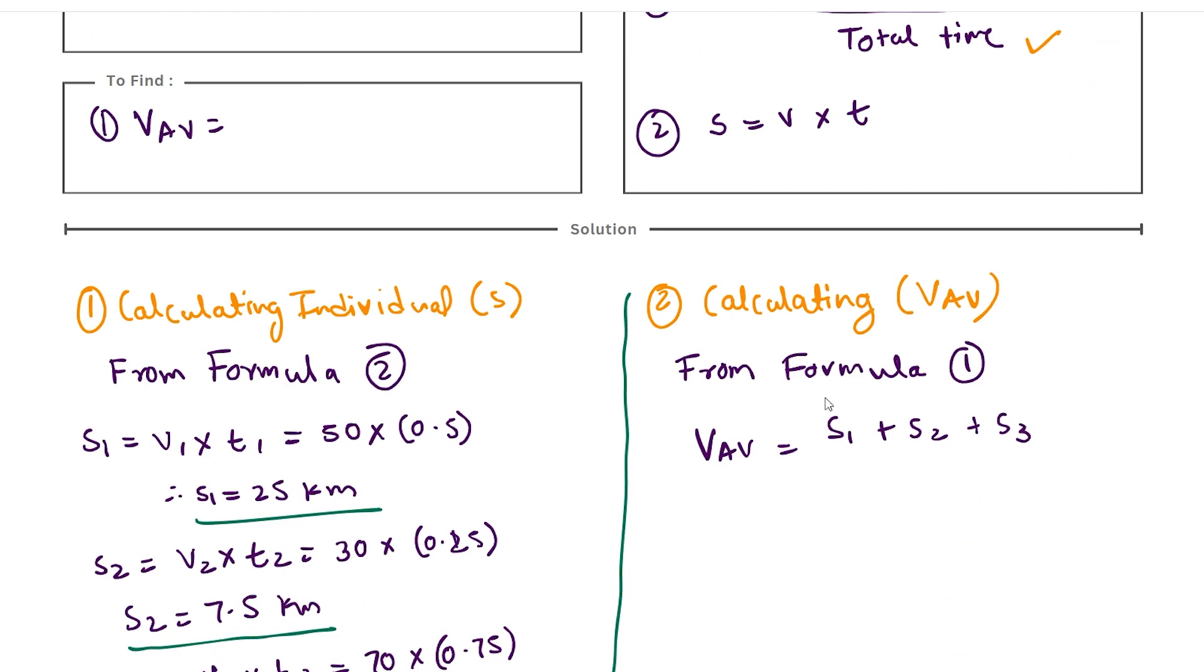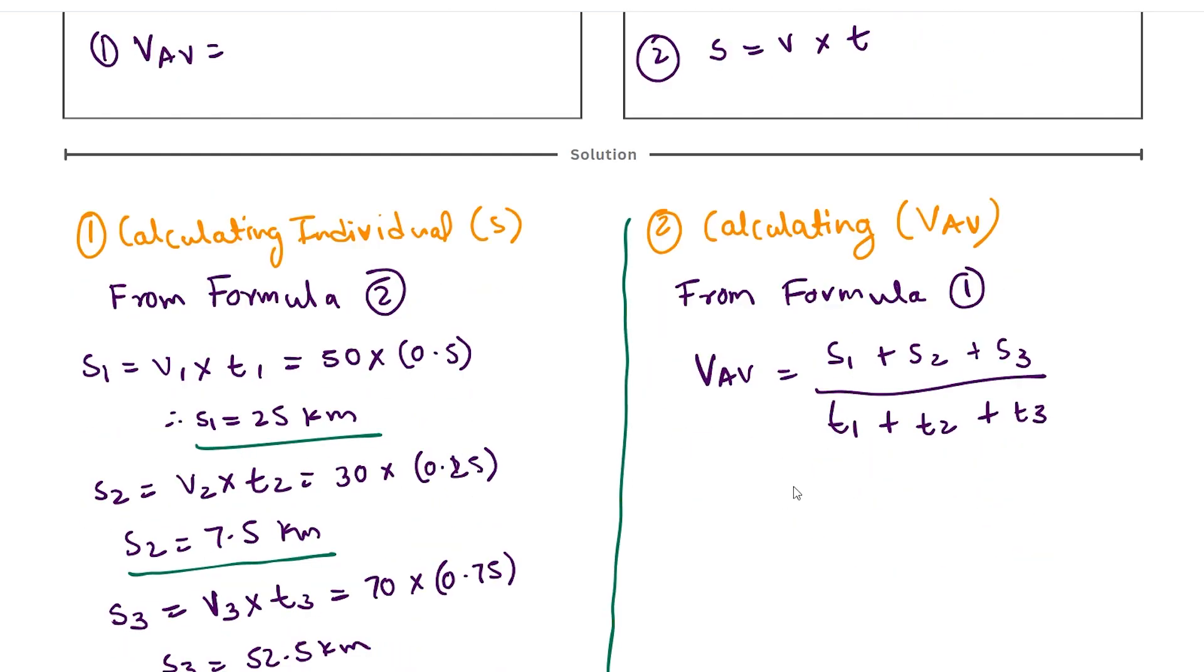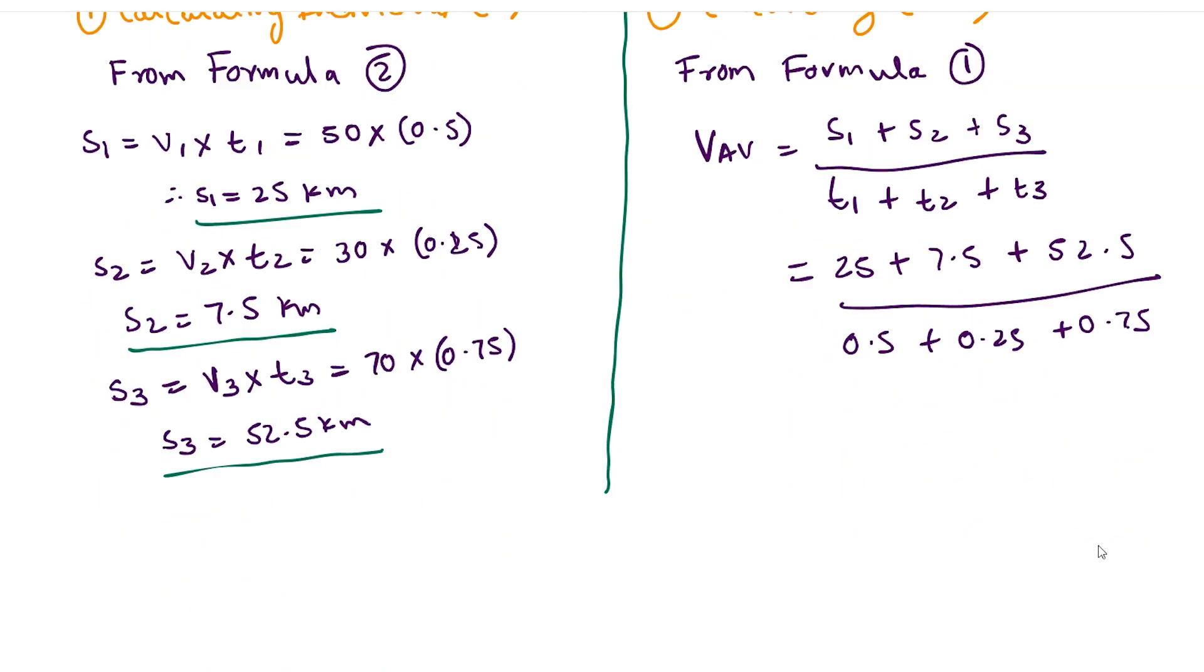From this formula we can say that average speed is equal to s1 plus s2 plus s3 as this makes up our total path length divided by t1 plus t2 plus t3 as this makes up our total time. If we substitute all the known values we get 25 plus 7.5 plus 52.5 divided by 0.5 plus 0.25 plus 0.75.